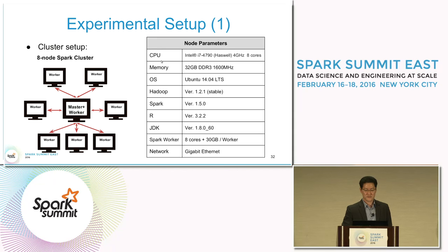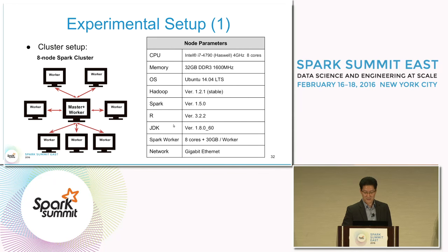Each node has 32 gigabytes of memory, and we use Spark version 1.5. Therefore, each Spark worker has eight cores and 30 gigabytes of memory.